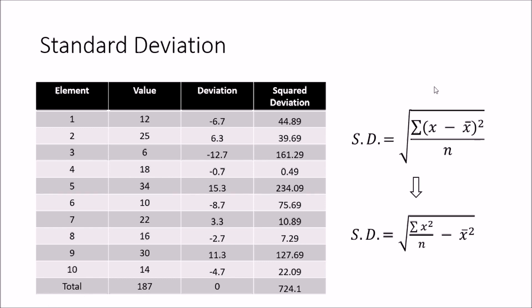This is the general definition of standard deviation, which most of the time we don't use directly because of the many negative signs. We can convert it to a simpler form with only a single negative sign: the equation becomes the square root of (sigma x-squared divided by n) minus x-bar squared, where x-bar is the mean value.